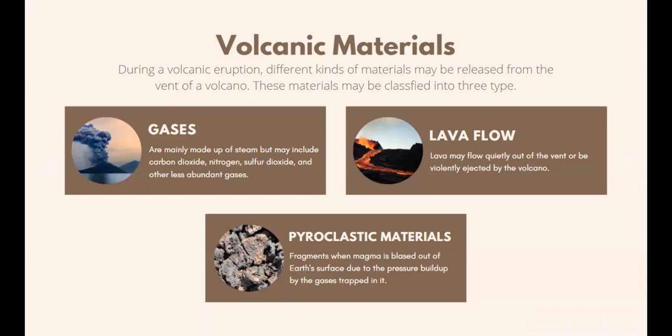During a volcanic eruption, different kinds of materials may be released from the vent. These may be classified into three types: gases, lava flow, and pyroclastic materials. Gases are given off in large quantities and are mainly steam but may include carbon dioxide, nitrogen, sulfur dioxide, and other gases. Lava is molten material that reaches the Earth's surface — its temperature may reach up to 1,200 degrees Celsius and it can incinerate anything flammable along its path. Pyroclastic materials are fragments blasted out due to pressure buildup of trapped gases, ranging in size from dust particles to massive boulders.